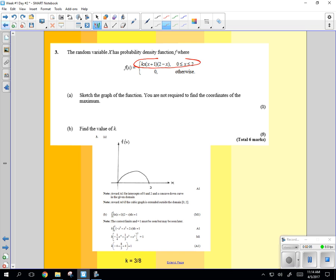So if we're going between 0 and 2, we have x plus 1 and 2 minus x. So x plus 1 happens at negative 1.